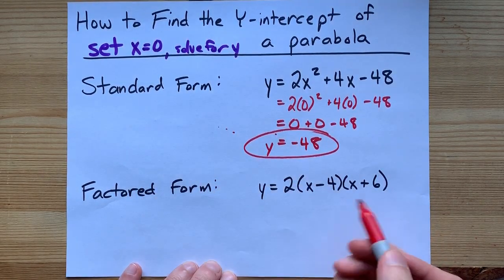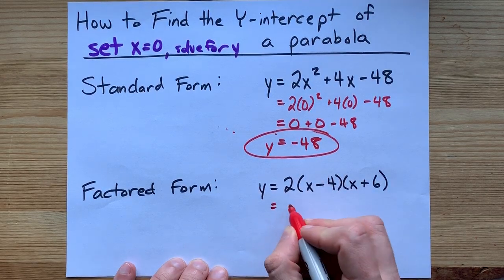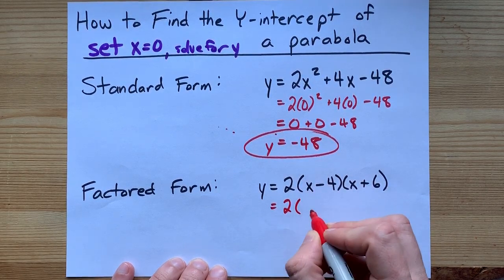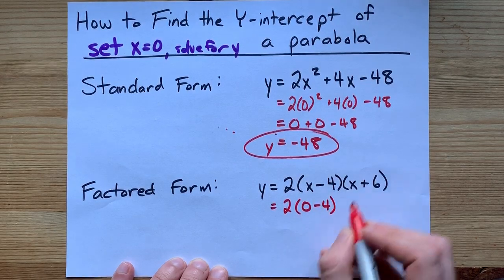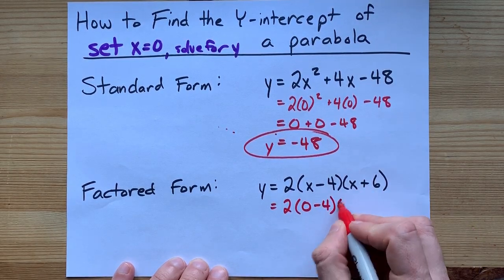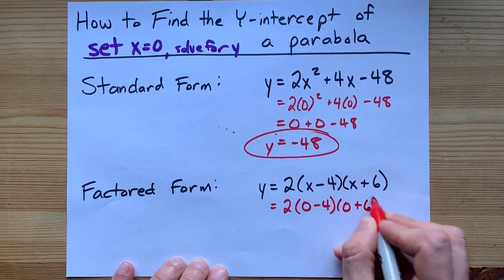It's true if you have it in factored form as well. You can do 2 times, replace x with 0. That becomes 0 minus 4, and this x plus 6 becomes 0 plus 6.